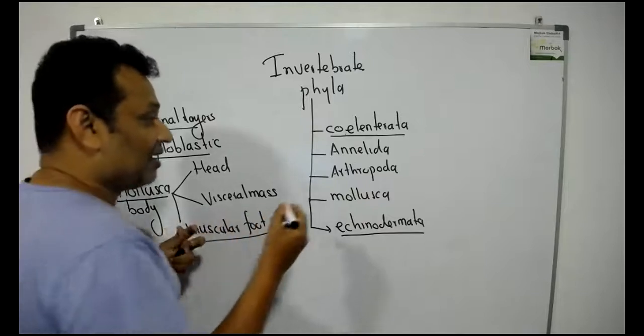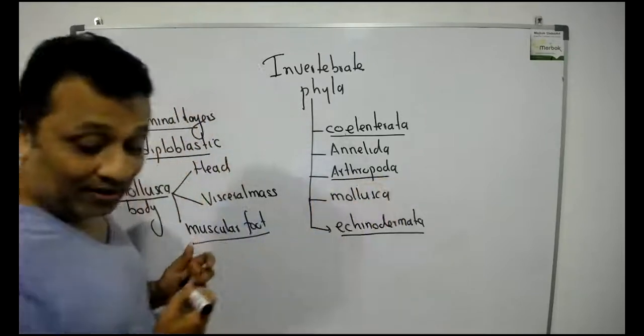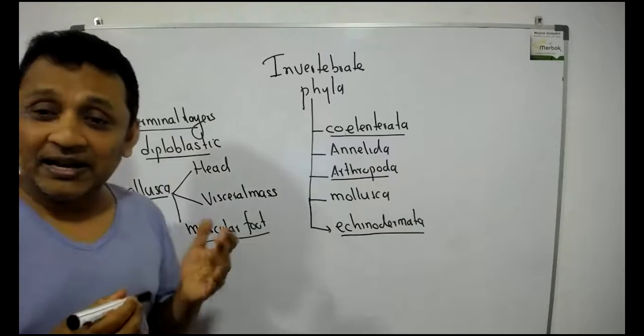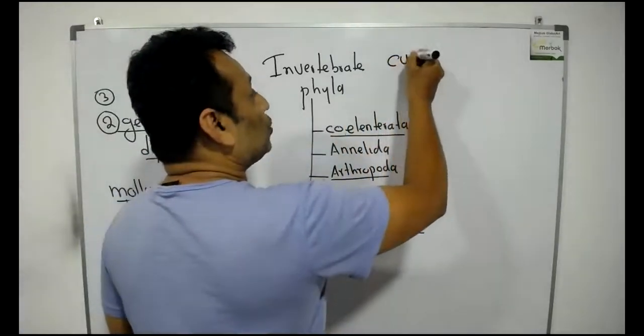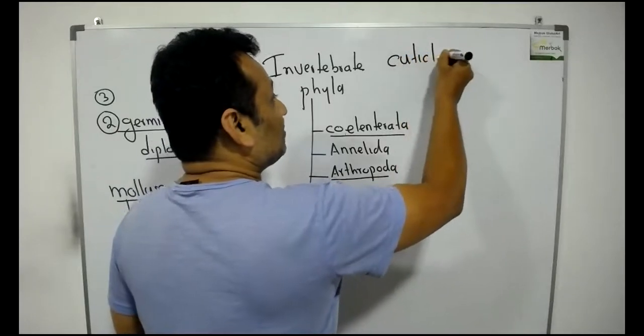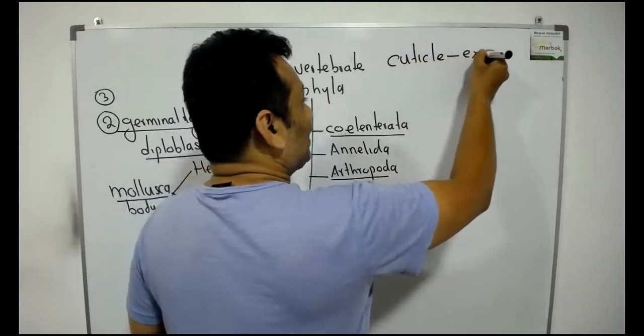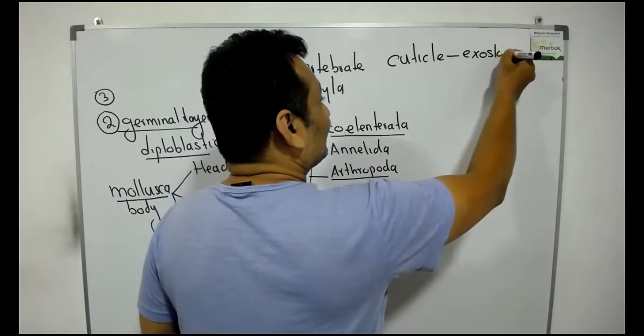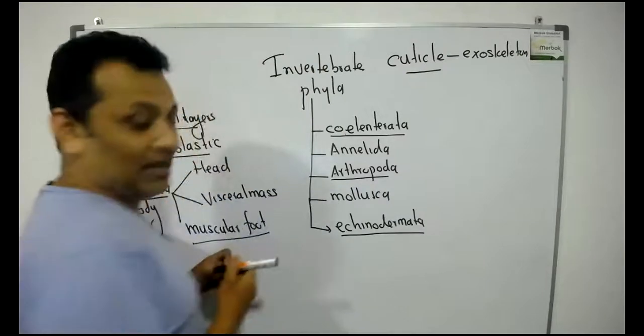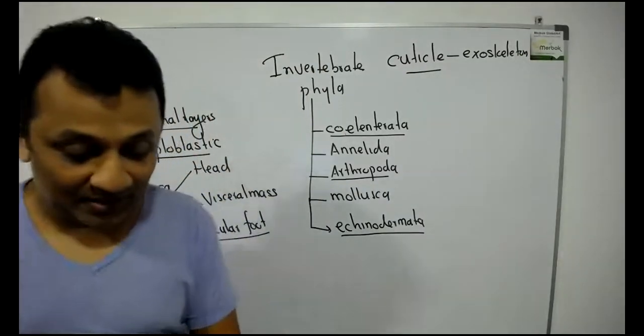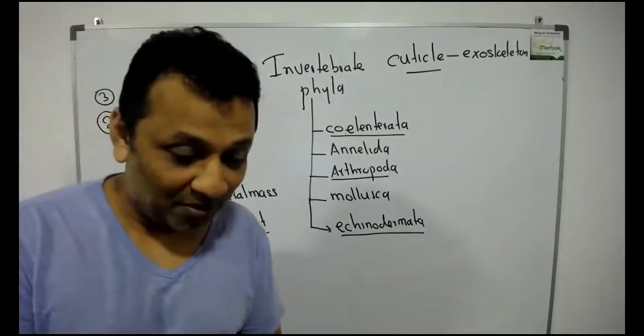And finally, Arthropoda is the one having a chitinous cuticle. These people have used the word cuticle. It is a word they apply for exoskeleton. So that is the answer for the A question, Roman number one.